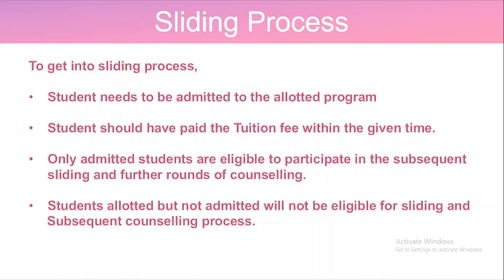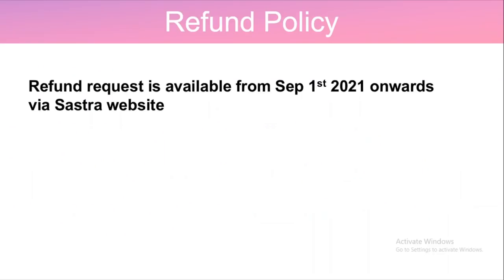You can also participate in further rounds of counseling — Round Two, Round Three, Round Four. However, if a student was allotted a seat but has not taken admission, they will not be eligible for the sliding process or subsequent counseling rounds. They do have a refund policy — once you have paid the amount, you can avail a refund from September 1st, 2021 onwards via the SASTRA website query portal.